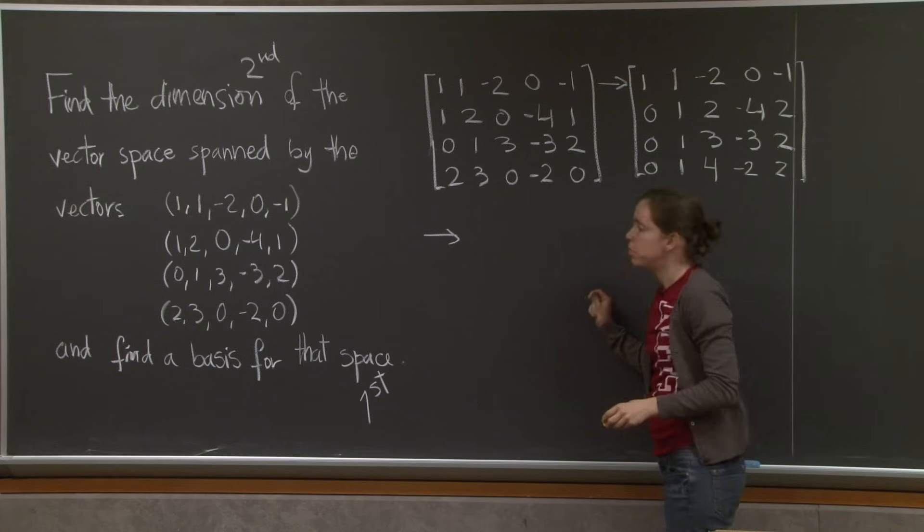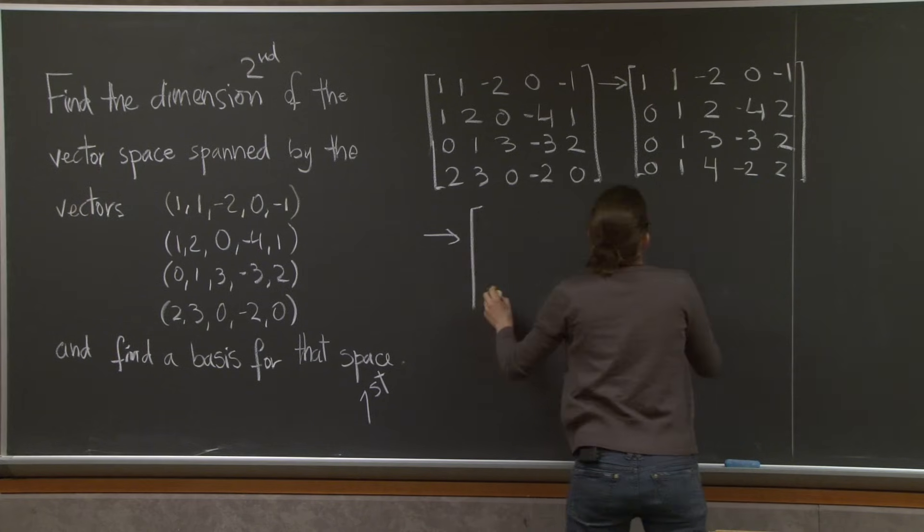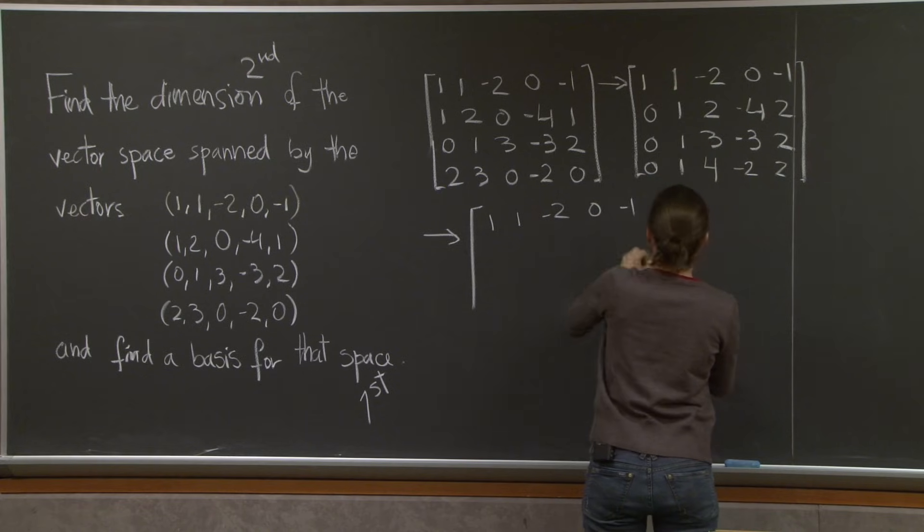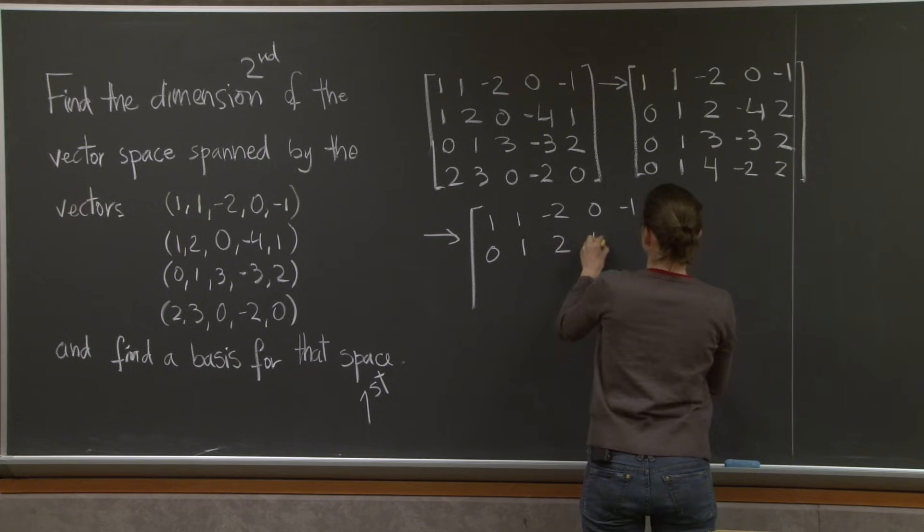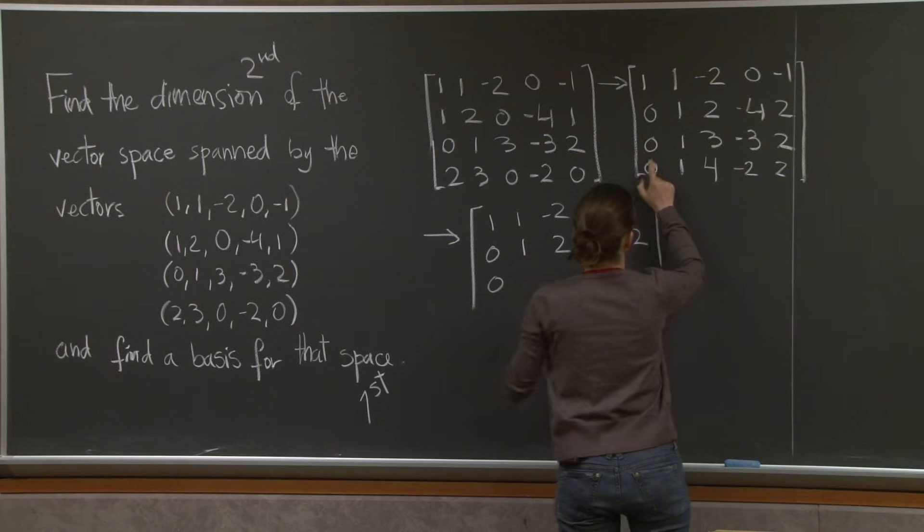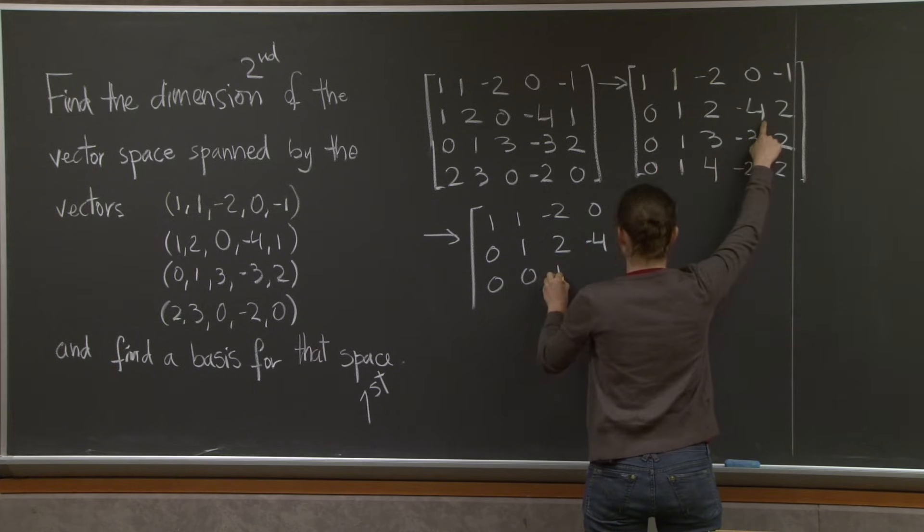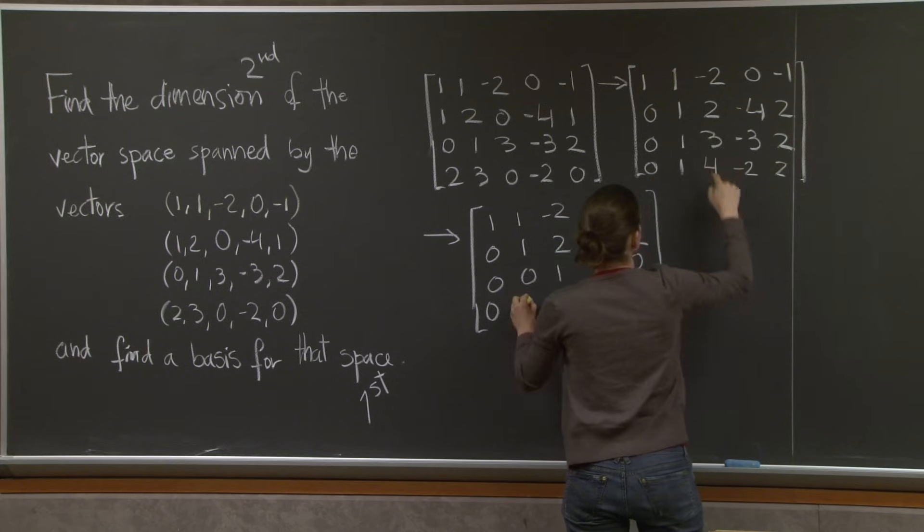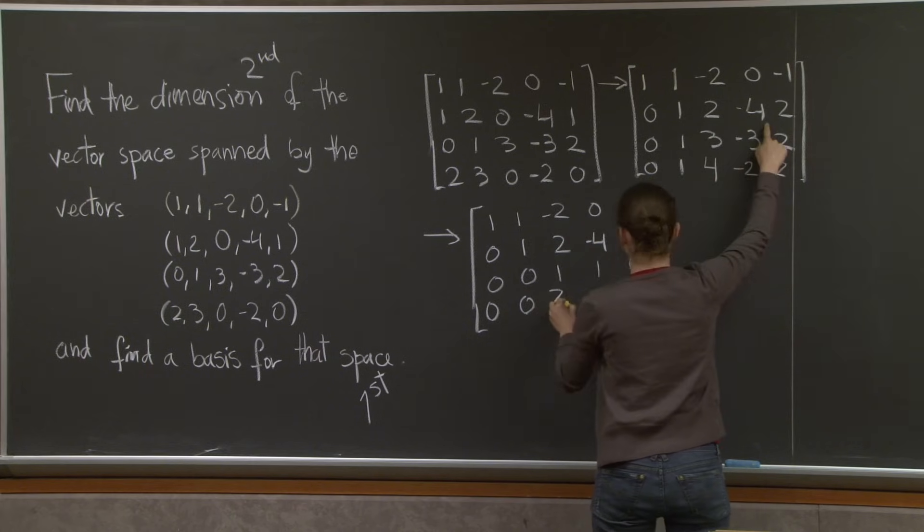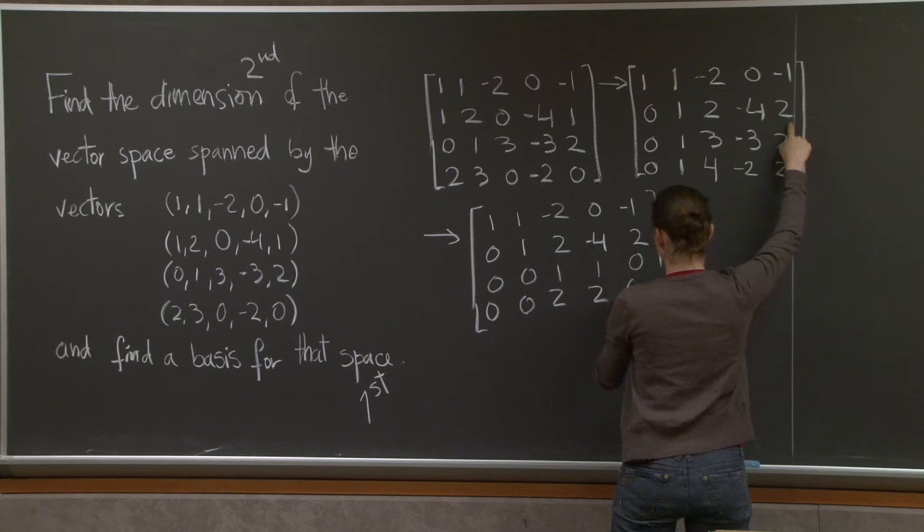All right, one more step. 1, 1, 1, minus 2, 0, minus 1. All these are done. 0, 1, 2, minus 4, 2, 0. Oh, 1 minus 1 is 0. 3 minus 2 is 1. Minus 3 plus 4 is 1. 2 minus 2 is 0. 1 minus 1 is 0. 2, 2 again, and 0.